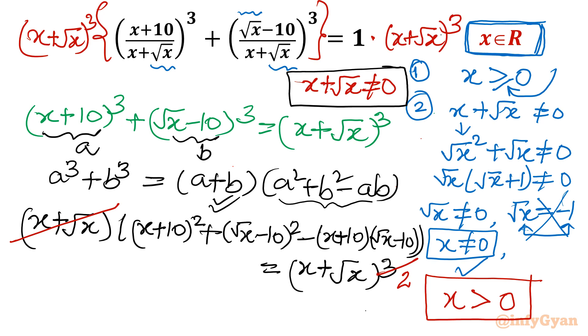So what is left ultimately: (x+10)² + (√x-10)² - (x+10)(√x-10) = (x+√x)². Now we have to solve this equation.